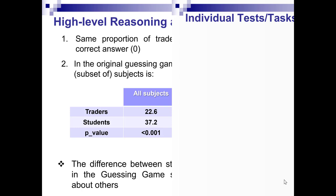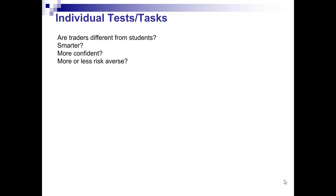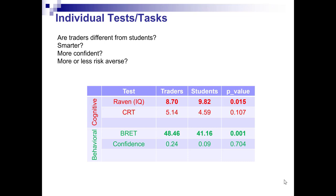Can we explain these differences by individual characteristics? Maybe traders are smarter than students, or more confident, or have different levels of risk aversion. The answer is no. Traders are not smarter than students, as shown by the Raven test and Cognitive Reflection test results. They have the same level of confidence as students. Traders are less risk-averse than students, but this cannot explain the previous findings.